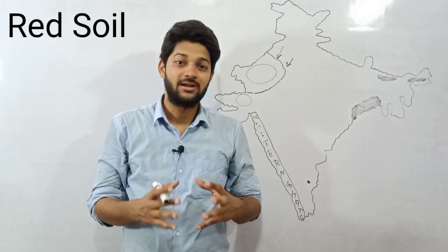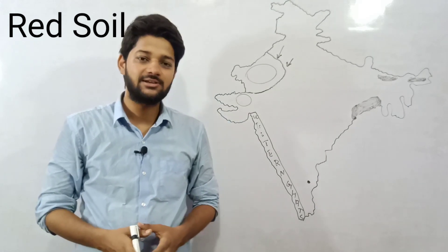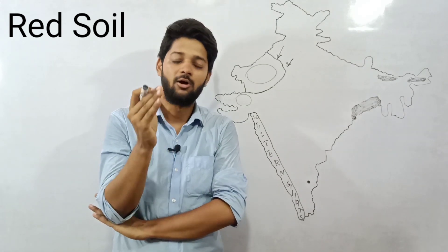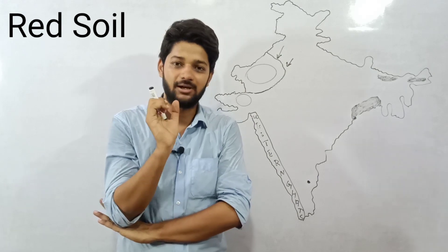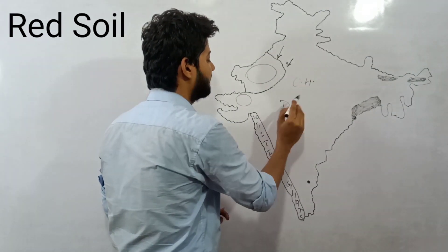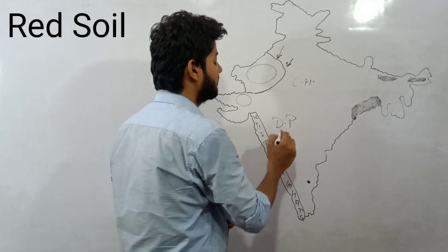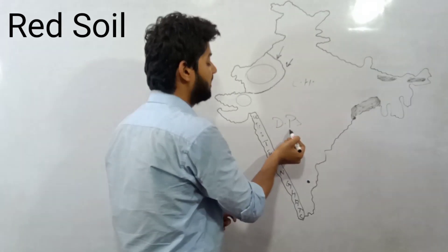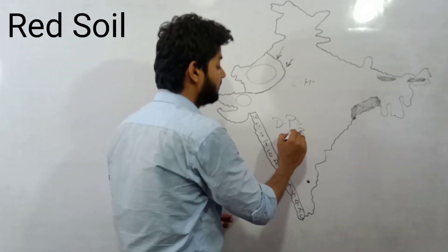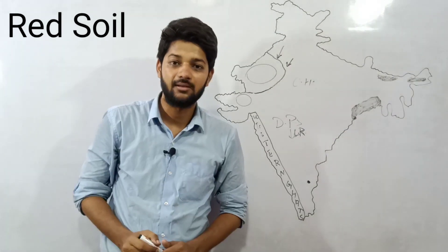The next is red soil. Red soil develops on the crystalline igneous rocks in areas of low rainfall of the eastern and southern Deccan Plateau — that is your central highland. On the eastern side and the southern side of the Deccan Plateau, where there is a low rainfall area, red soil develops.